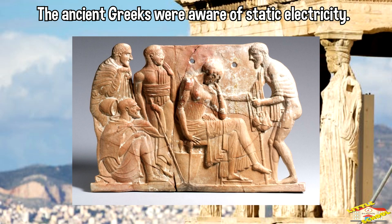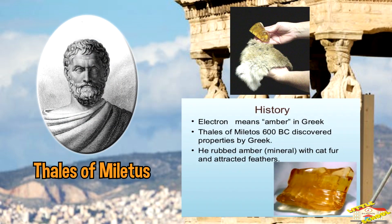The ancient Greeks were aware of static electricity around 600 BC. Thales of Miletus observed that rubbing certain materials like amber against animal fur would cause the amber to attract lightweight objects.